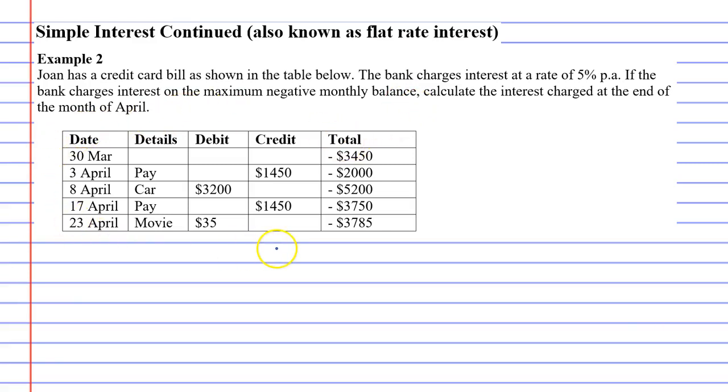If we have a look at this credit card bill, you'll notice the totals are all negatives because it's a bill—it's money that Joan owes. Banks want to make the most money out of you, so when they charge interest,